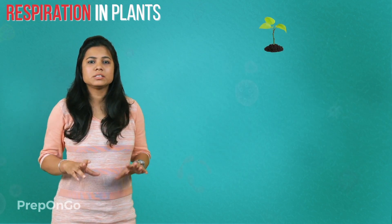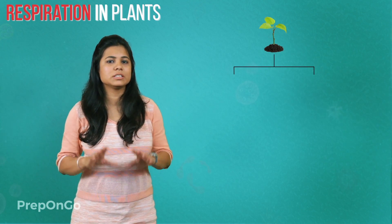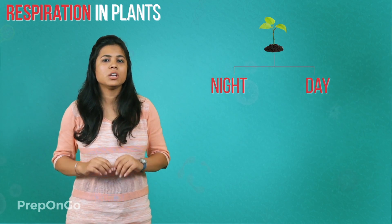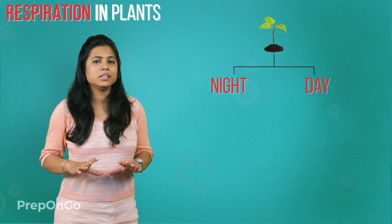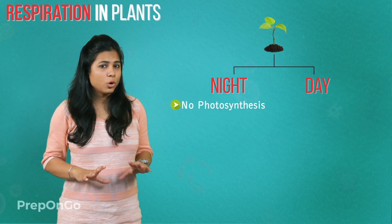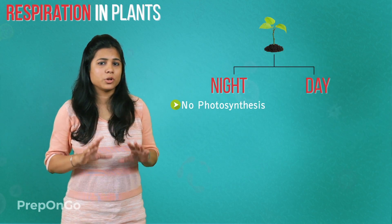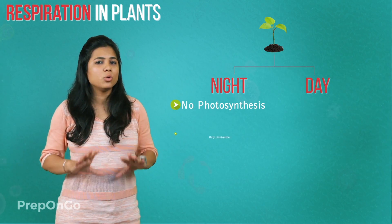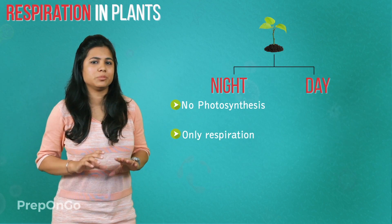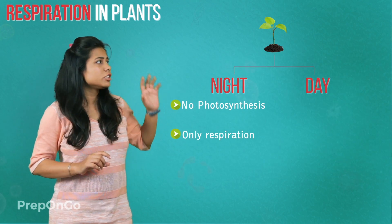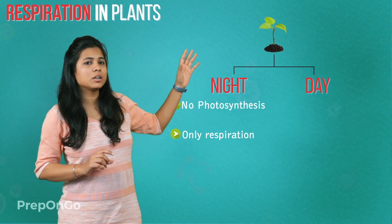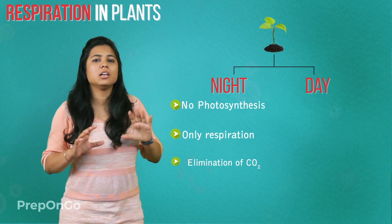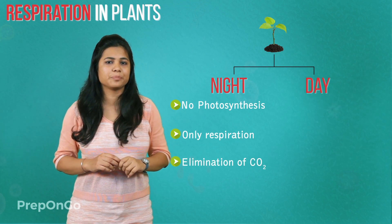The plants have two different conditions at night and day. At night, there is no photosynthesis process going on in the plants, so it has only the respiration process. The only work at night is the elimination of carbon dioxide.